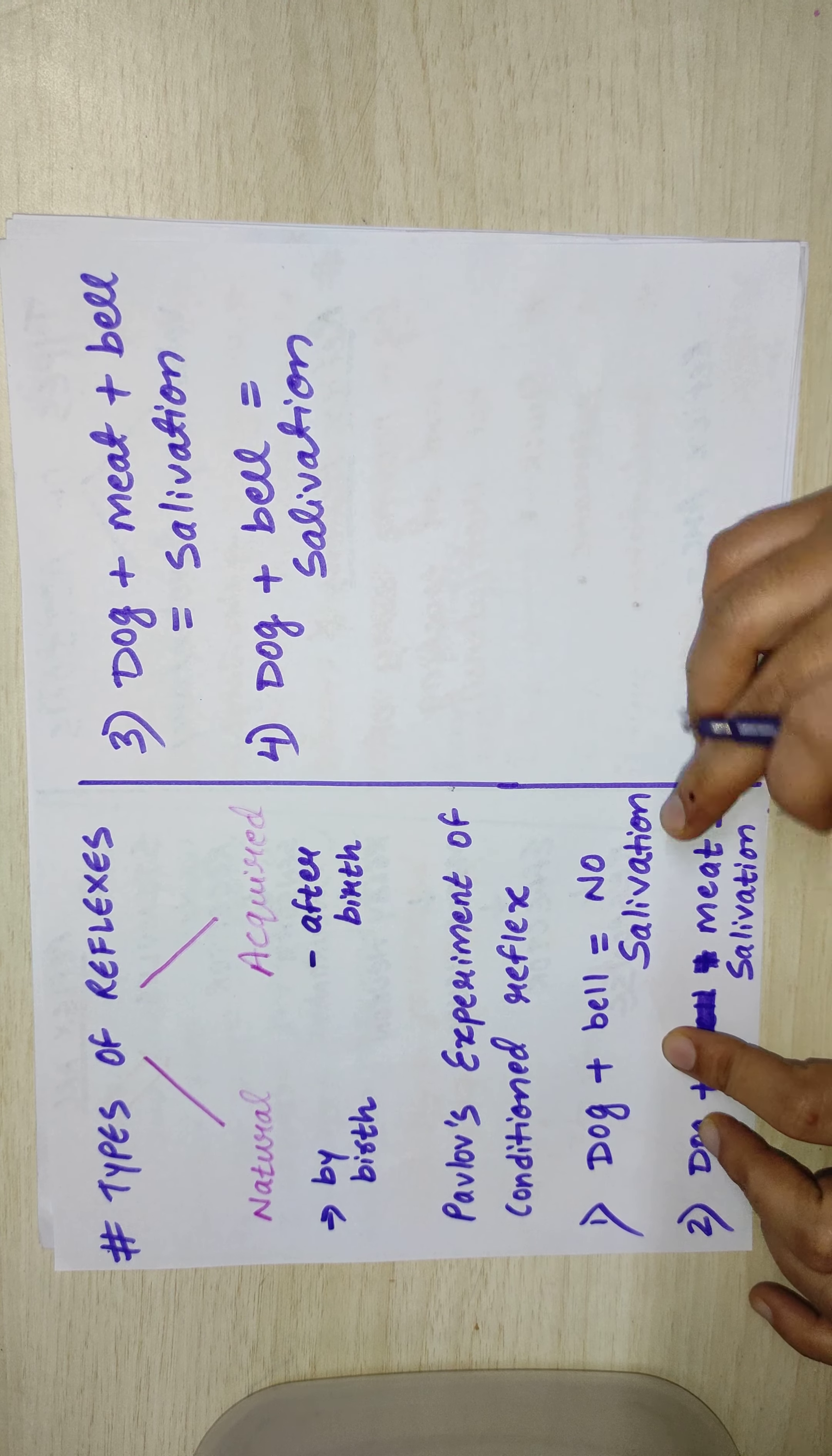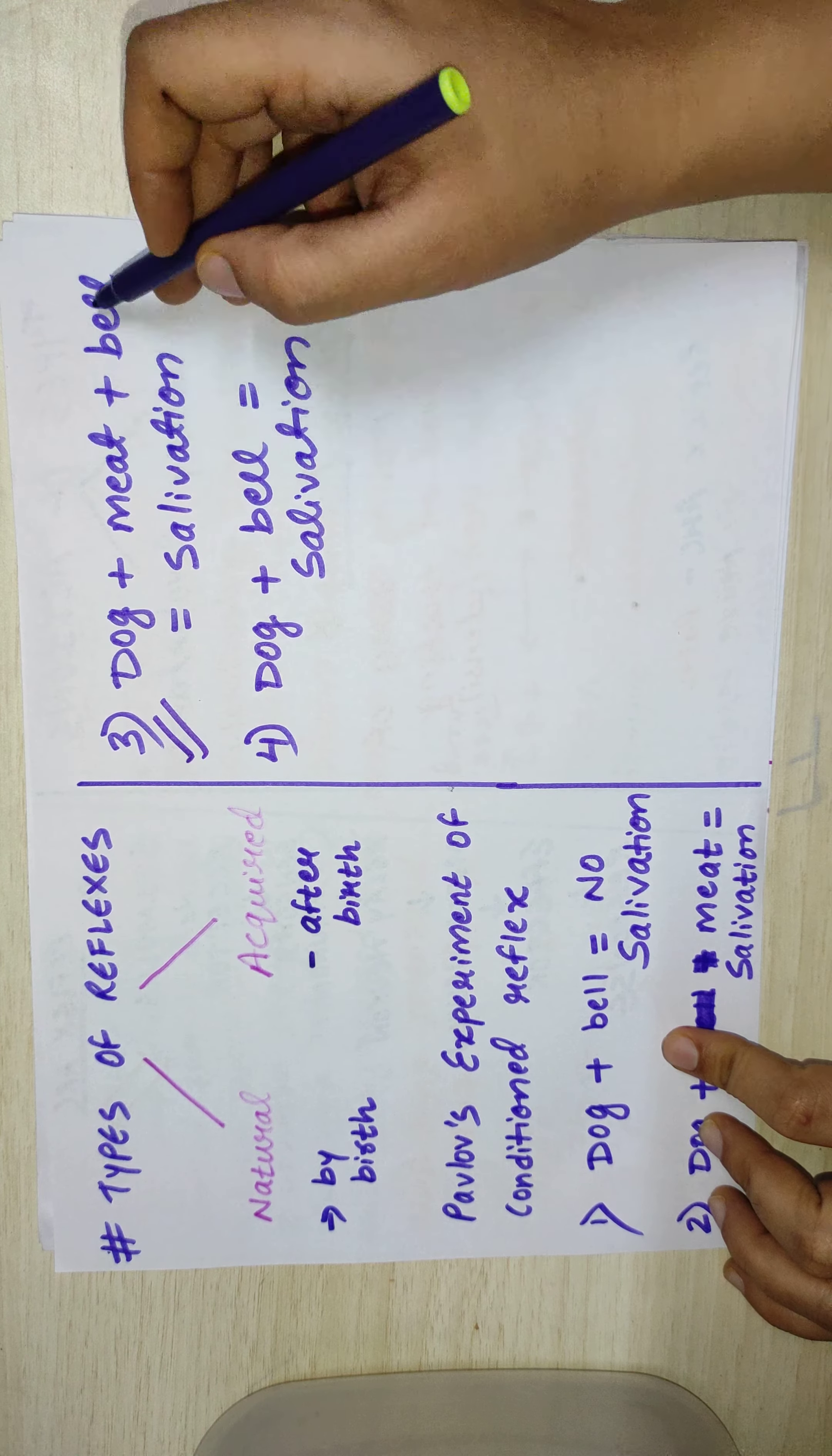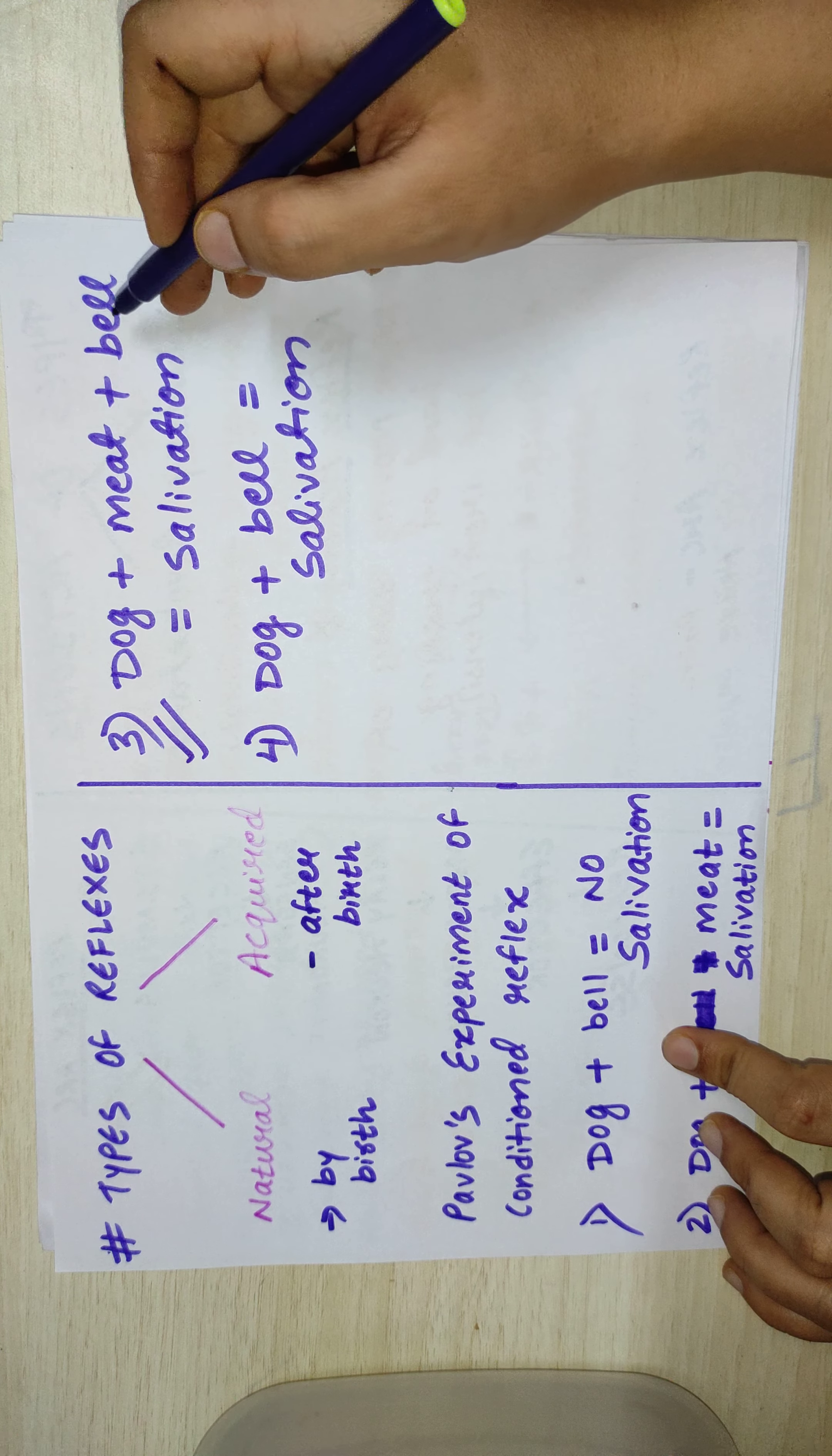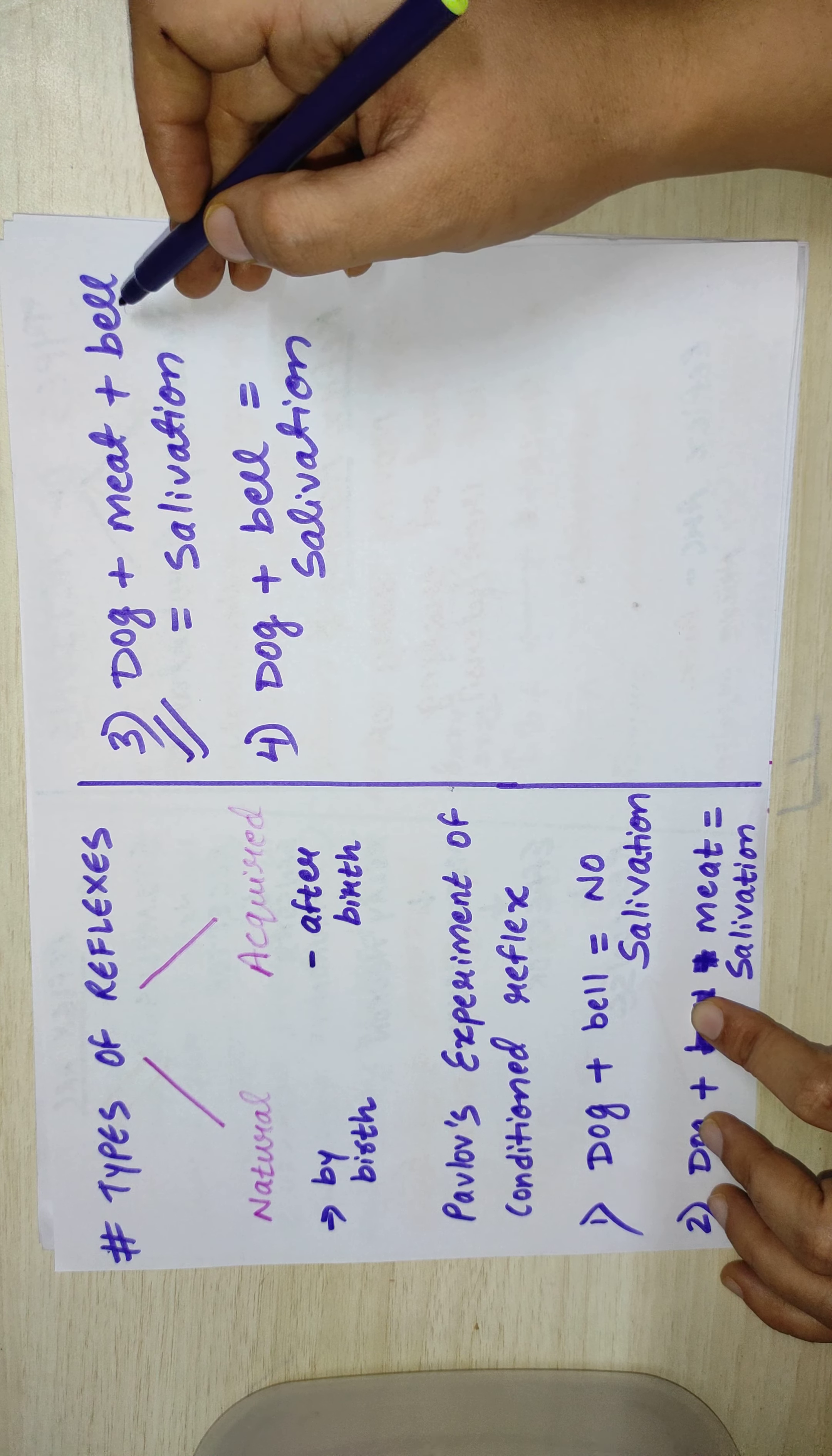But after this conditioning, when the dog was given the training that bell and meat are present together, he generated an involuntary action that came through learning. He learned that whenever the bell will ring, there will be meat.